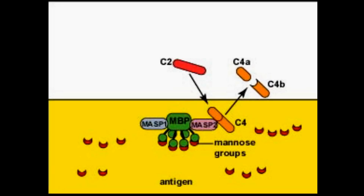The lectin pathway has similarities to both the alternative pathway and the classical pathway. It is similar to the classical pathway from C4 until the final common pathway — it's the same. The connection to the alternative pathway is that it does not require an antibody.